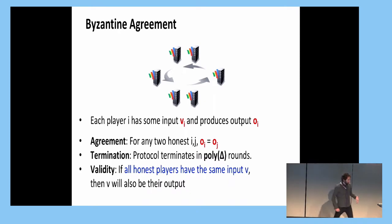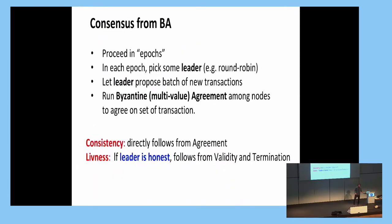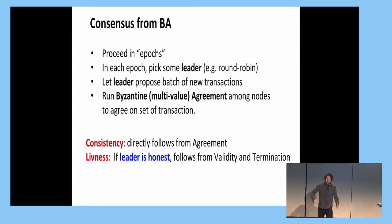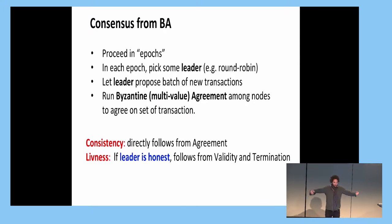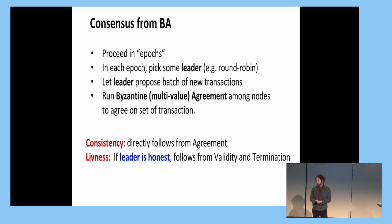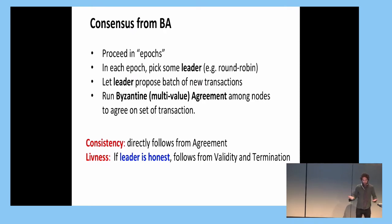Going back to the recipe, the liveness condition works as follows: whenever somebody wants to add a new transaction, they send it to the leader. If the leader is honest, he sends it to everybody, and by the validity requirement of the Byzantine agreement protocol, everybody starts with the same input — the batch of transactions — and they will therefore agree to it. Consistency of this recipe follows directly from the agreement property of the Byzantine agreement protocol.